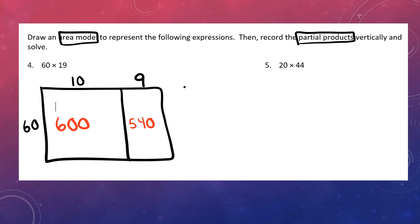Now they want me to do partial products. So I am going to set my problem up vertically just like we saw in the last problem. But now I am going to fill in the partial products. 600 plus 540. And I will add them together. 60 times 19 is 1,140.